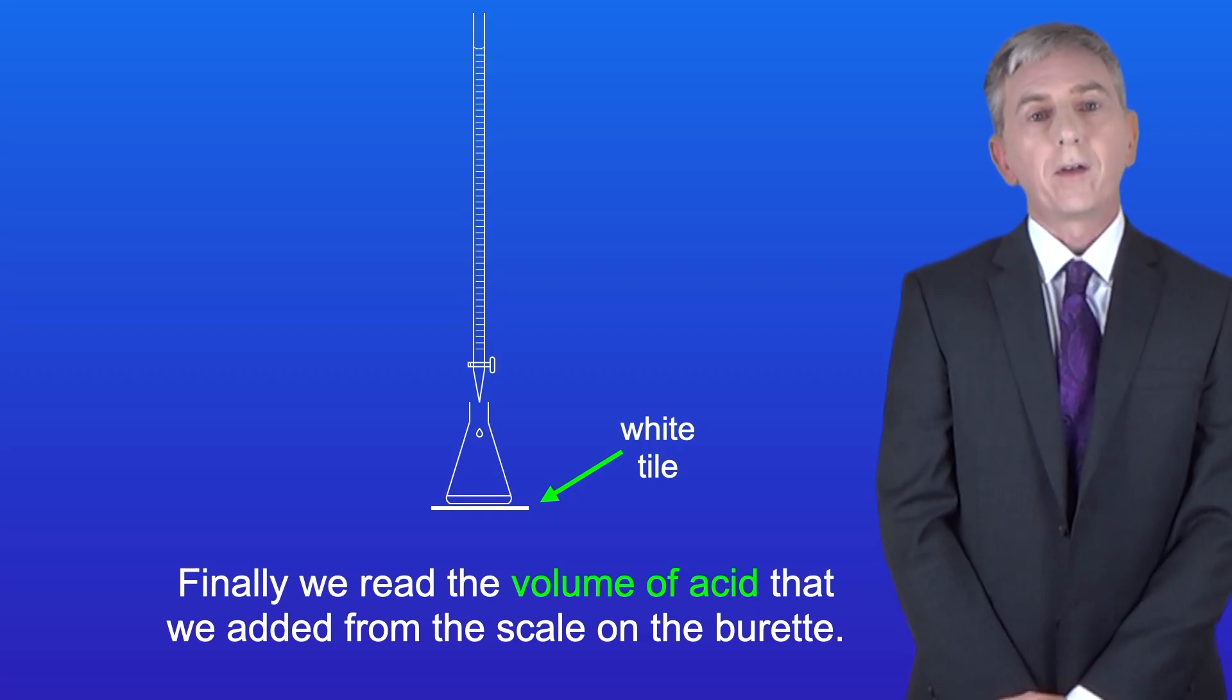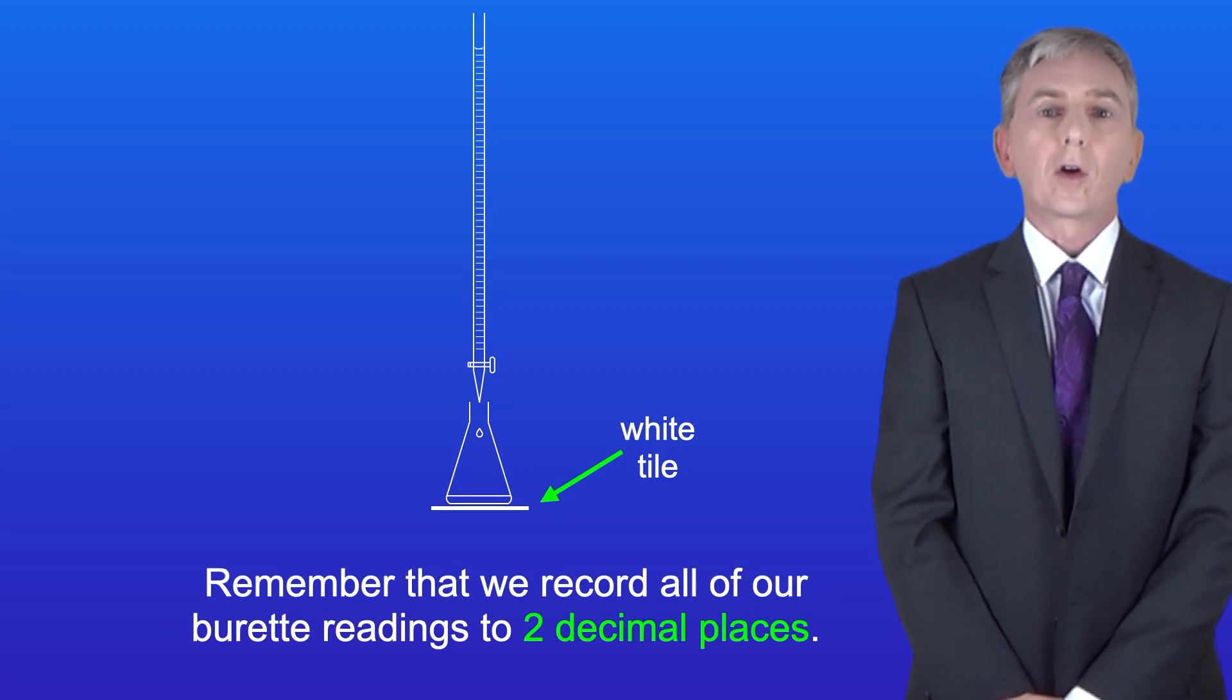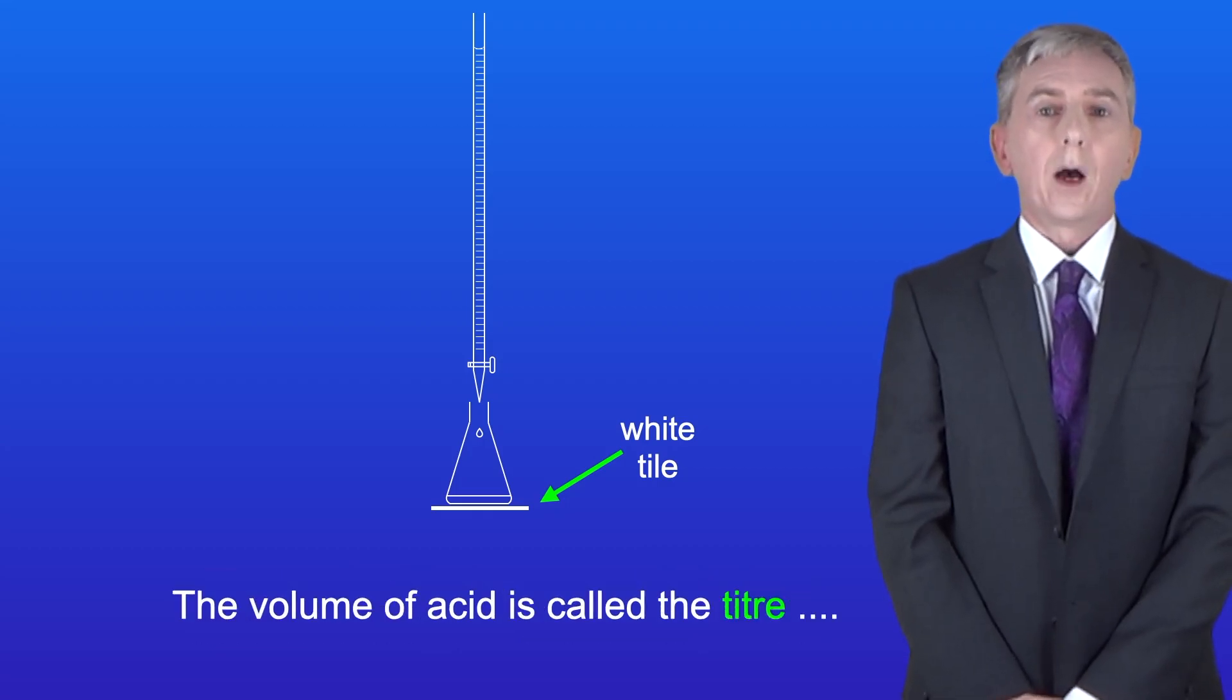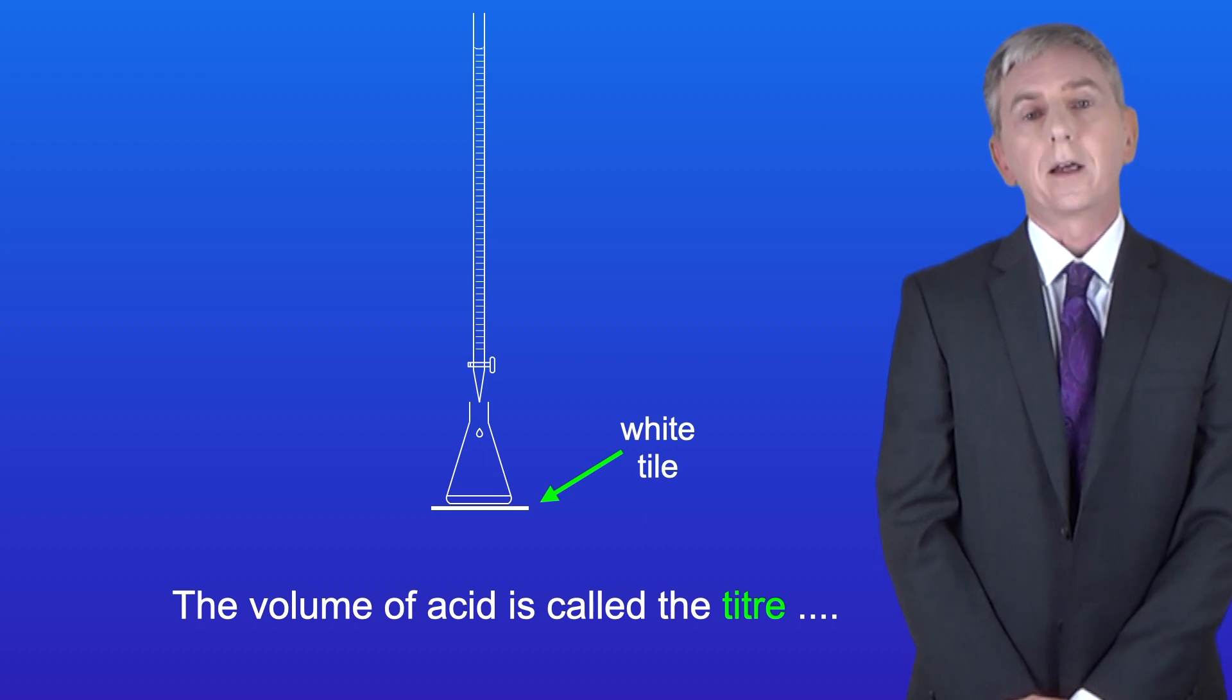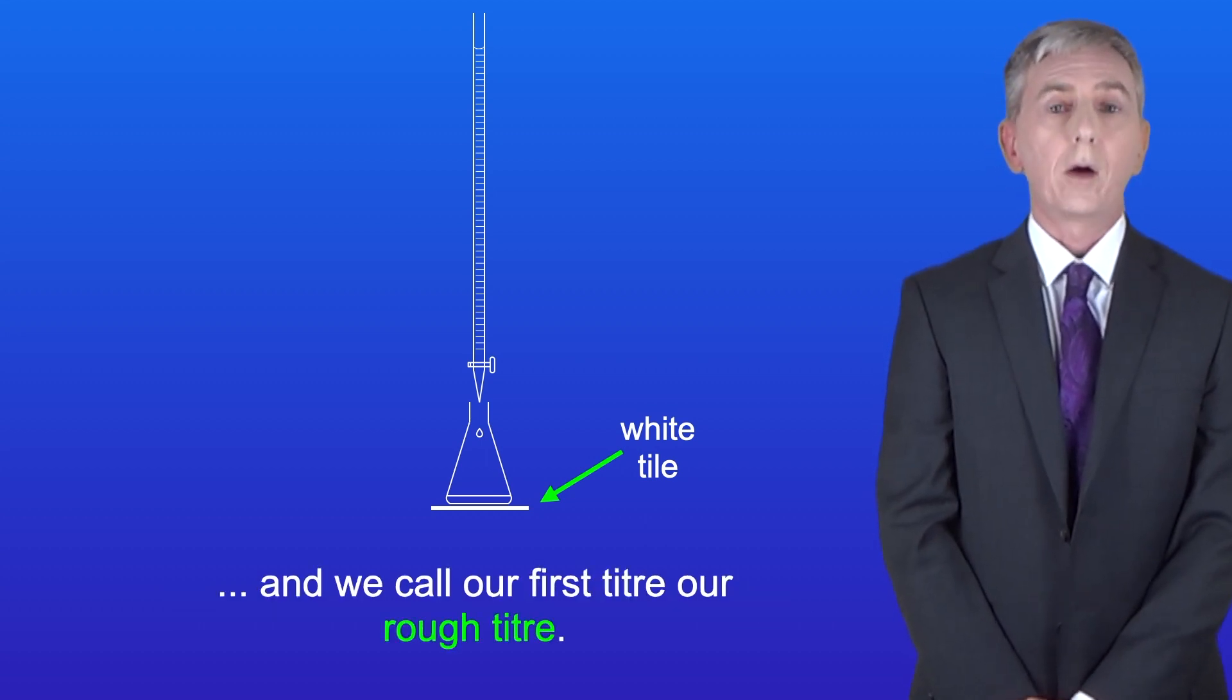Finally, we read the volume of acid that we added from the scale on the burette. And remember that we record all of our burette readings to two decimal places. Now the volume of acid is called the titer, and we call our first titer our rough titer.